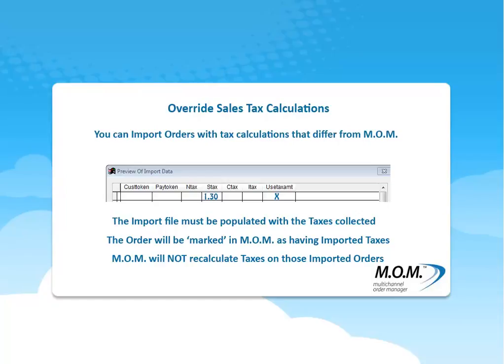The import file must be populated with the taxes collected on that order. You have to use the 'Use Tax Amount' checkbox and indicate the state tax, city tax, or local tax. That order will be marked in MOM as having imported taxes, and moving forward MOM will not recalculate taxes on those imported orders.